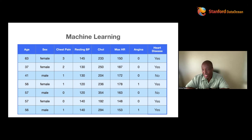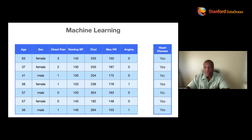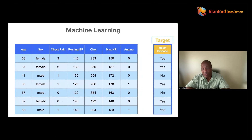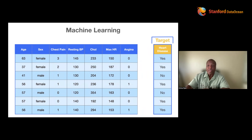For those of you who were here last time and know about machine learning: when you have a dataset like this, the machine says, what question are you asking me? What do you want me to answer? You might say, I want to know if a patient has heart disease. That's what we call the target variable.